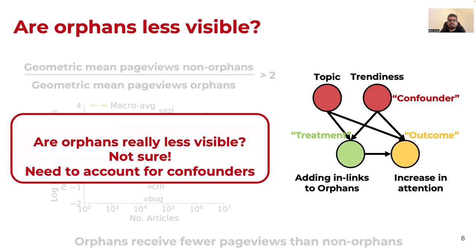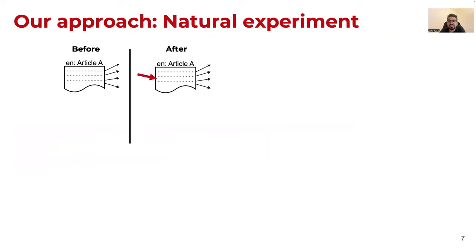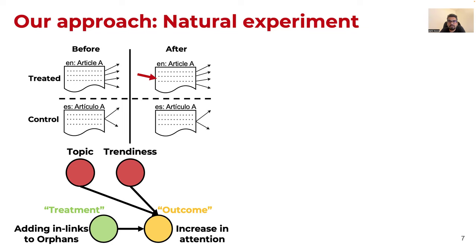And which means that we need to account for confounders. To do so, we resort to natural experiments, where we act as mere observers and let nature flip the coin for us. Specifically, we find an orphan article that received an in-link indicated by the red arrow in this graphic. And we exploit the fact that Wikipedia is inherently multilingual. By doing so, we find the same article, but in another language that remains an orphan. This naturally gives us our treatment and control groups and accounts for all the possible confounders.